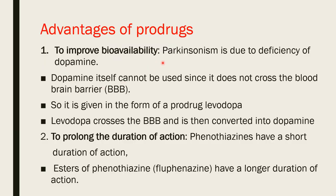Some examples of prodrugs: to improve bioavailability — in Parkinsonism there is a deficiency of dopamine. If we give dopamine directly it will not cross the blood-brain barrier, but if we give the prodrug levodopa, it crosses the blood-brain barrier and is converted into dopamine. Second, to prolong duration of action — phenothiazine has a shorter duration of action, but using the ester prodrug of phenothiazine increases the half-life and produces a longer duration of action.